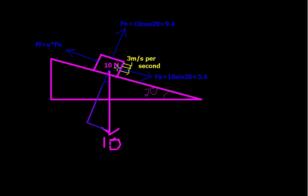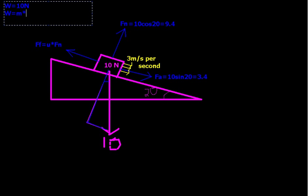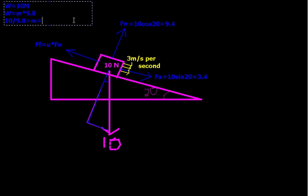So what's our total acceleration? Well, this becomes a bit of a pain, but it's really not too bad. First off, let's figure out: if the weight is equal to 10 Newtons, what is the mass? The weight equals mass times gravity, or mass times 9.8. So if we take 10 Newtons divided by 9.8, we get a mass of 1.02 kilograms — pretty close to 1, but not quite.